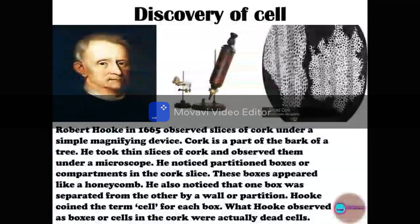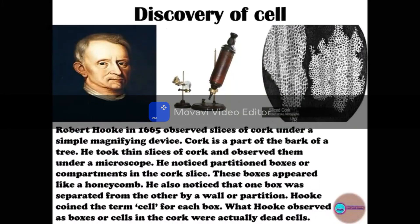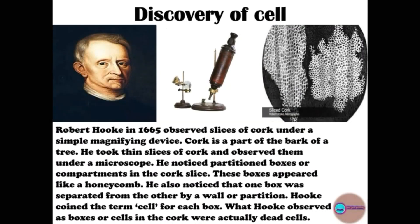Now let's understand the discovery of cell. Robert Hooke is the first scientist who discovered the cell. Robert Hooke discovered cells in a thin slice of cork in 1665. Cork is a part of the bark of a tree. He observed it under the microscope.